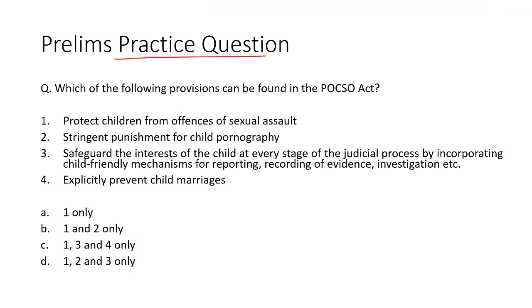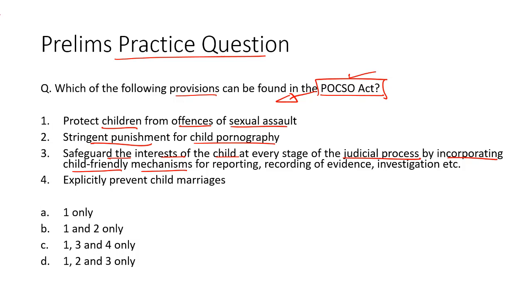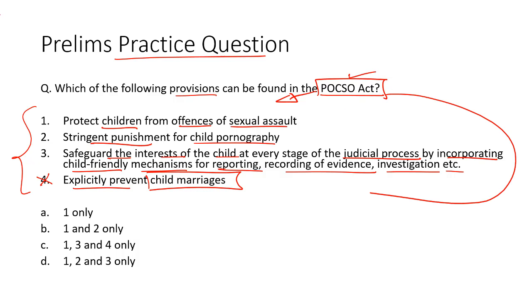Now let's take up the practice questions for today. Which of the following provisions can be found in the POCSO Act? POCSO stands for Protection of Children from Sexual Offenses Act. It contains provisions to protect children from offenses of sexual assault, stringent punishment for child pornography, and safeguards for the interests of the child at every stage of the judicial process by incorporating child-friendly mechanisms for reporting, recording of evidence, investigation, etc. The fourth option — to explicitly prevent child marriages — is not explicitly laid out in the POCSO Act, whereas the other three are contained in the legislation. Hence, option D is the right answer.